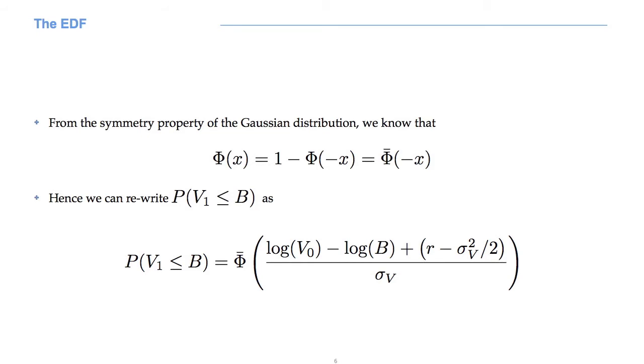Using the symmetry property of the normal distribution, we can rewrite that probability in terms of the so-called survival function. If we have phi x, this corresponds to phi bar of minus x. In words, for a Gaussian distribution, the probability of observing something that is smaller than x is equal to the probability of observing something which is greater than minus x.